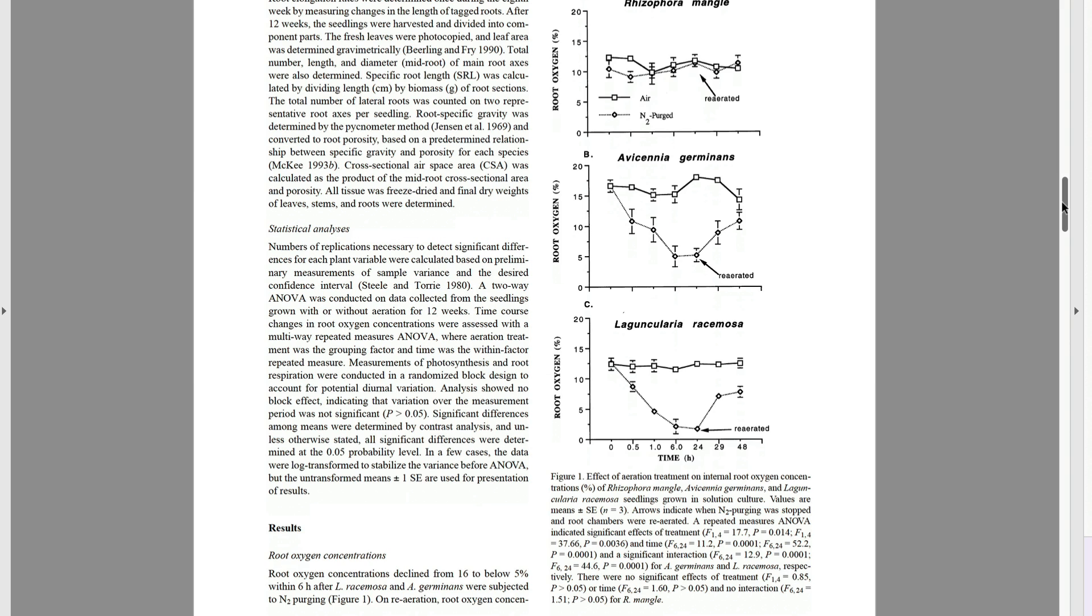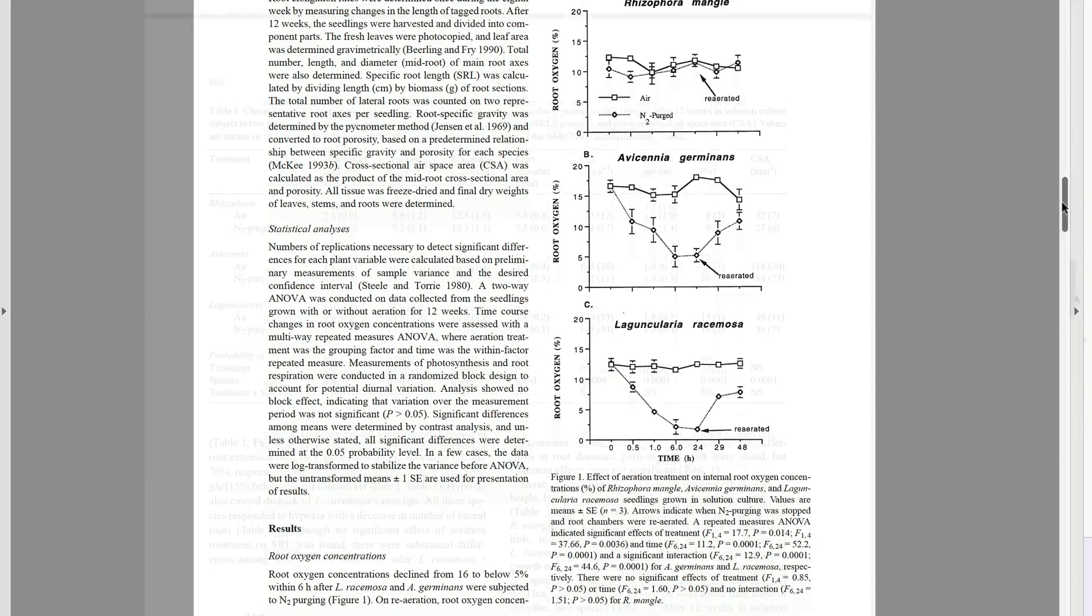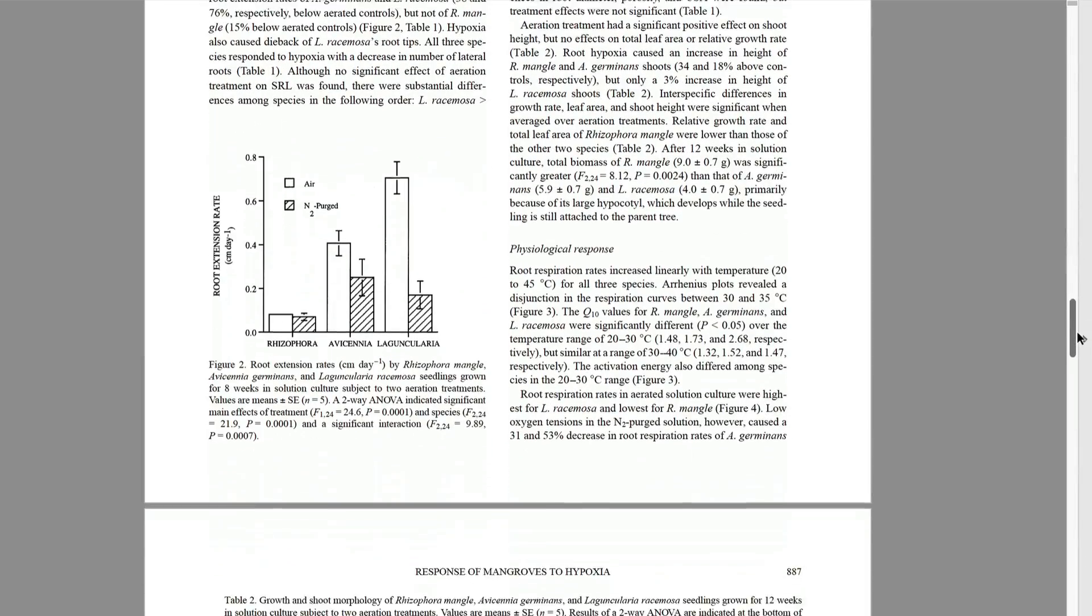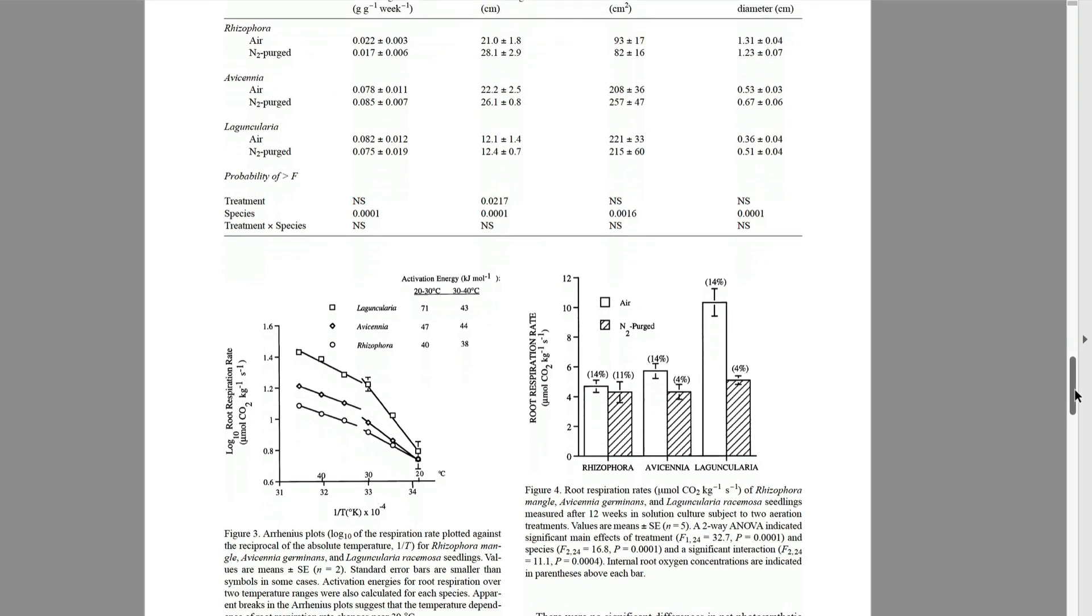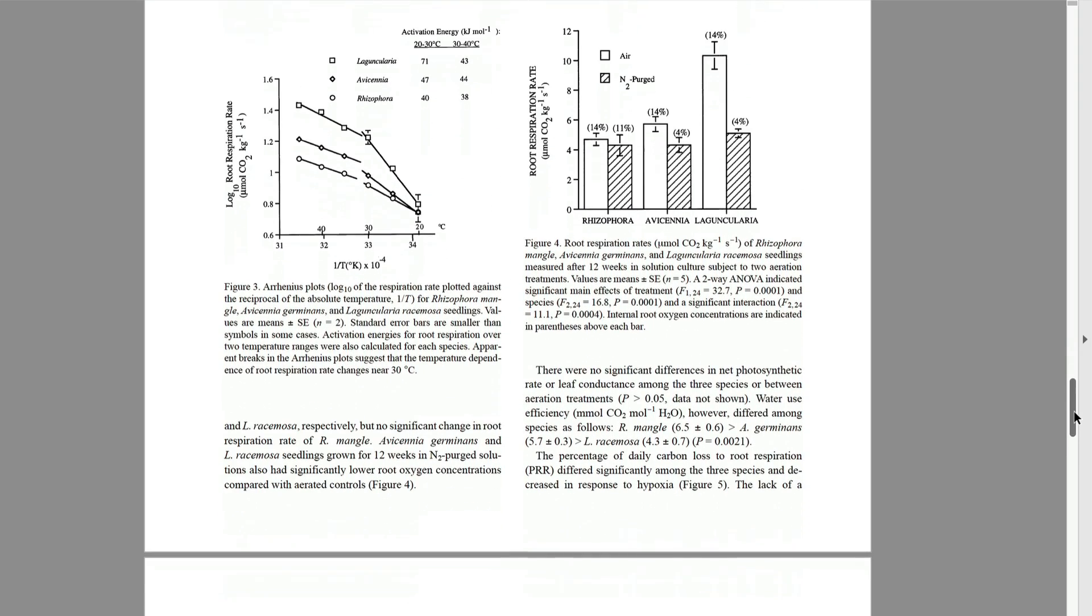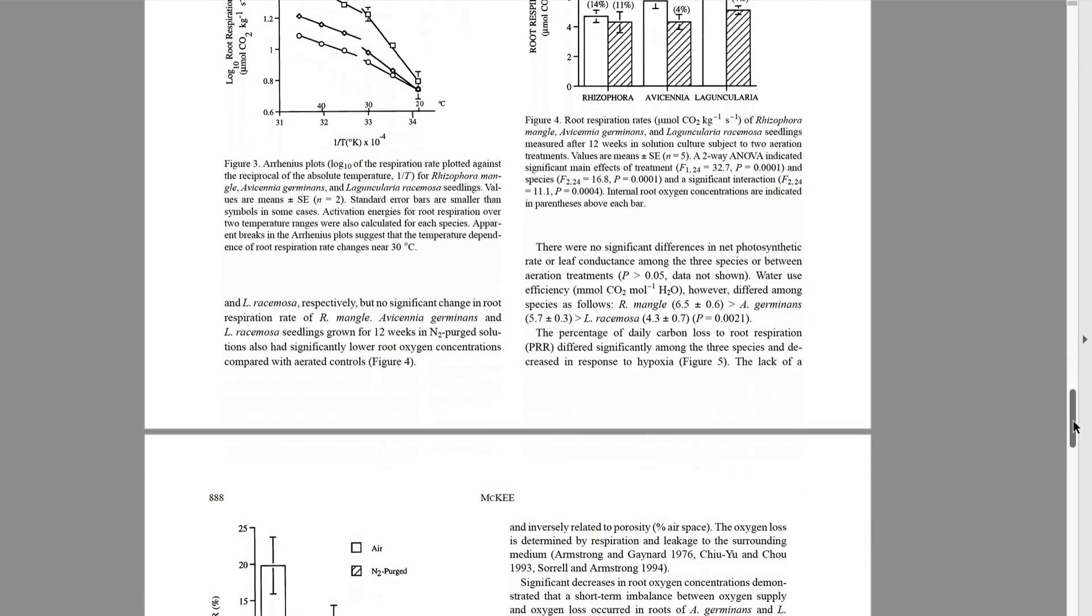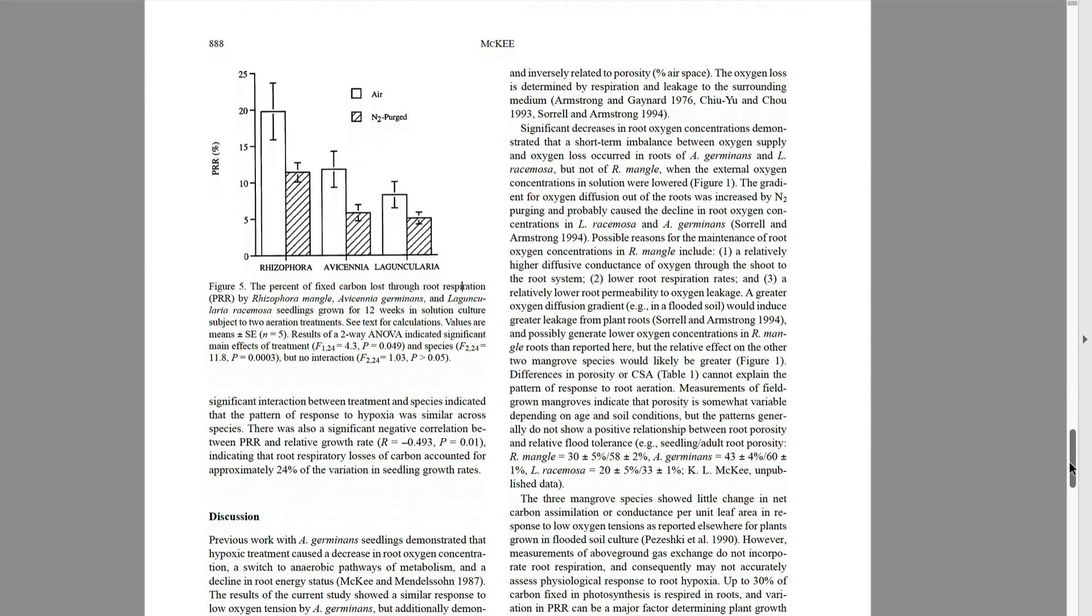The reader can then look at the graphs to see exactly how root oxygen fluctuated over time. The narrative continues with descriptions of how root and shoot growth in morphology and physiology were affected by species and treatment, as shown in the rest of the tables and figures.